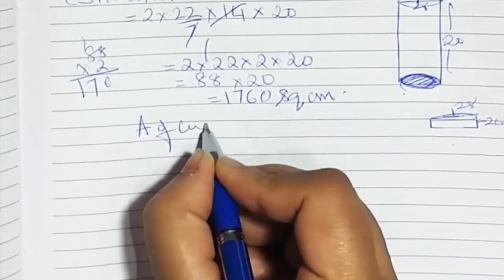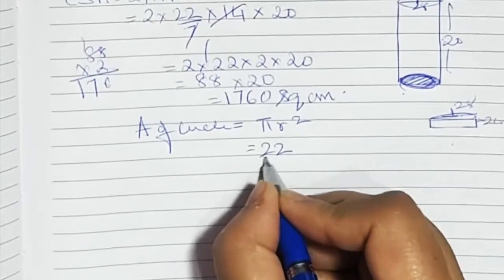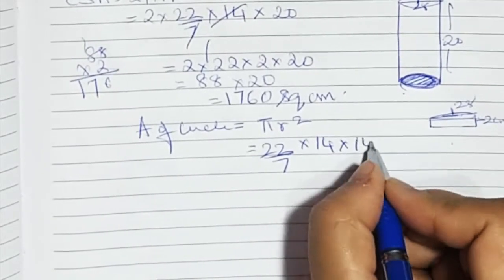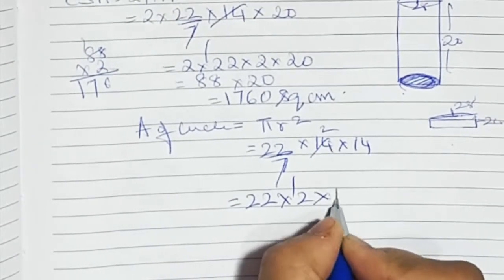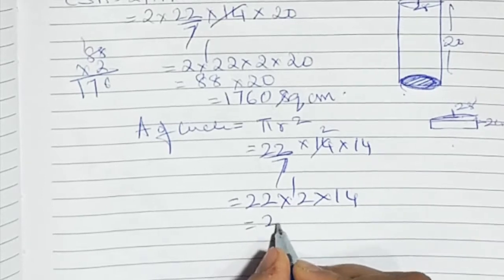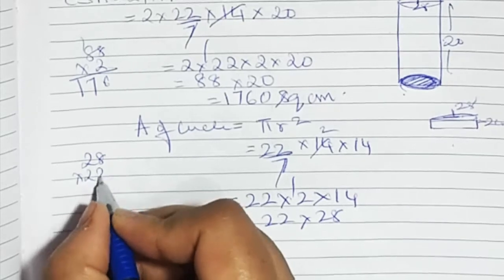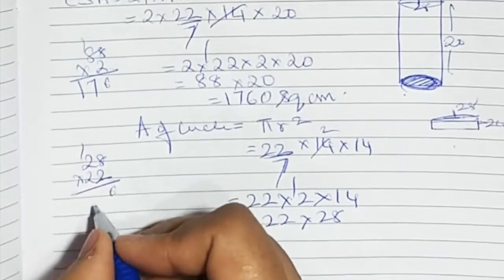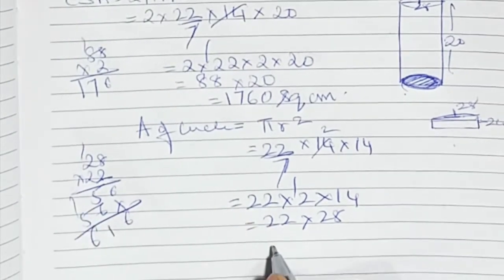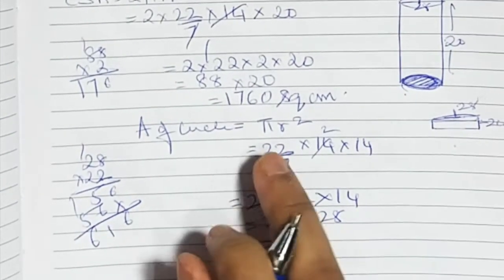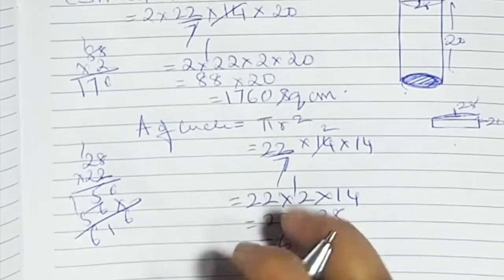Area of circle is πr², that is 22 upon 7 into 14 into 14. The 7 cancels giving 22 into 2 into 14, which is 22 into 28. Working that out: 28 into 22 is 616 square centimetres. So we have 616 and 1760.